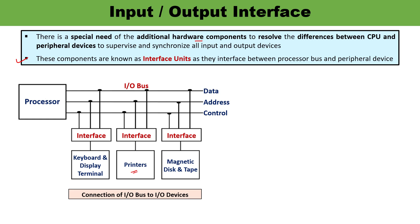For example, the controller related to the printer has functions like controlling paper motion, controlling print timing, and selection of printing characters. Every peripheral has a controller, and the controller can be kept separately or integrated within the peripheral. Here you can see the IO bus — input-output bus — which consists of data lines, address lines, and control lines.